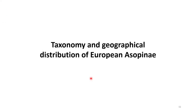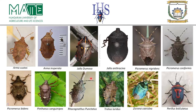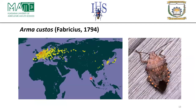Regarding taxonomy and graphical distribution of European Asopinae — these are our target species mainly found in Europe, which are considered European Asopinae species. Let me start with Arma custos.